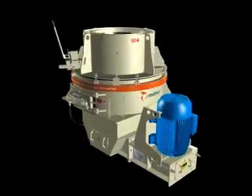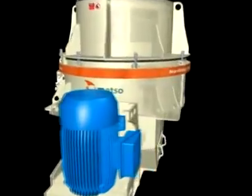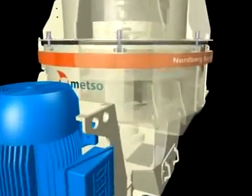The Barmak crusher uses a field-proven rock-lined rotor that acts as a high-velocity drystone pump, hurling a continuous rock stream into a rock-lined crushing chamber.